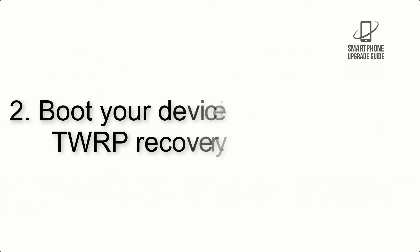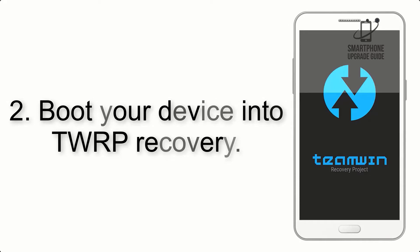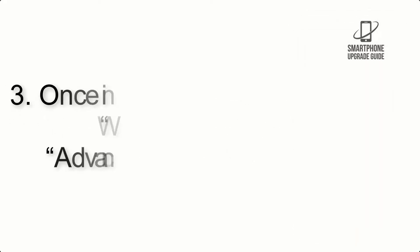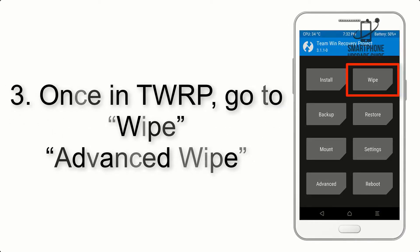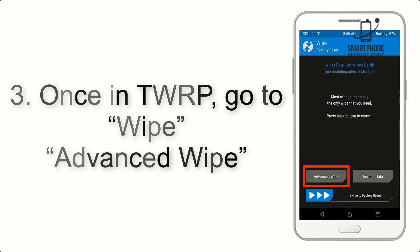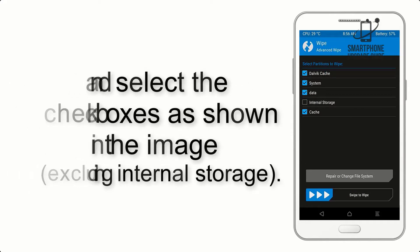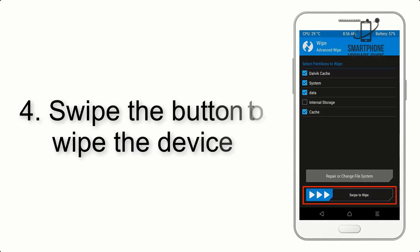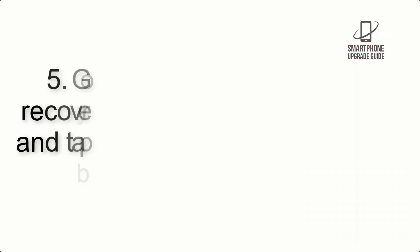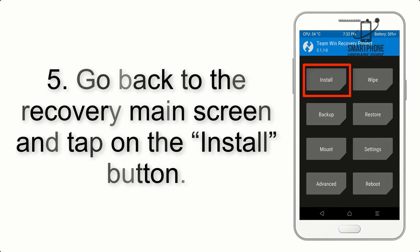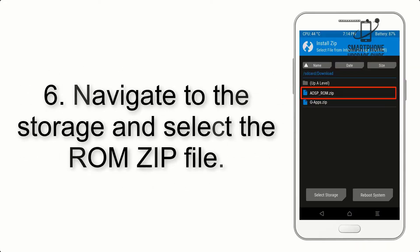Step 2: Boot your device into TWRP recovery. Once in TWRP, click on Advanced Wipe and select the checkboxes as shown in the image, excluding internal storage. Step 4: Swipe the button to wipe the device. Step 5: Go back to the recovery main screen and tap on the Install button.